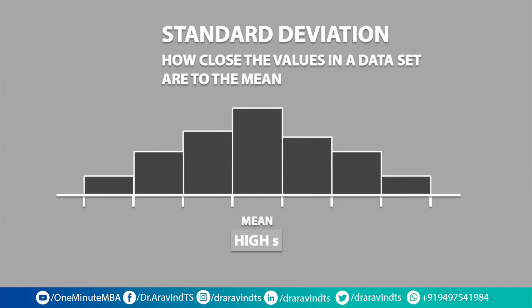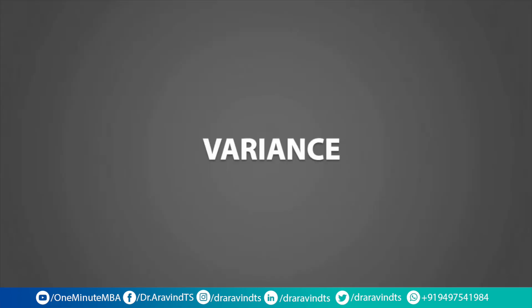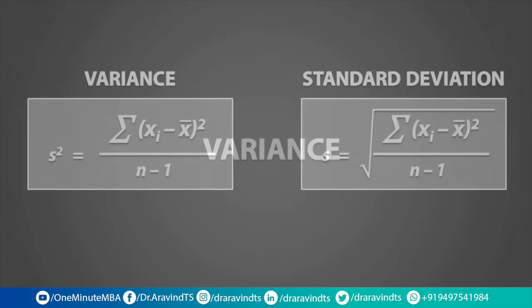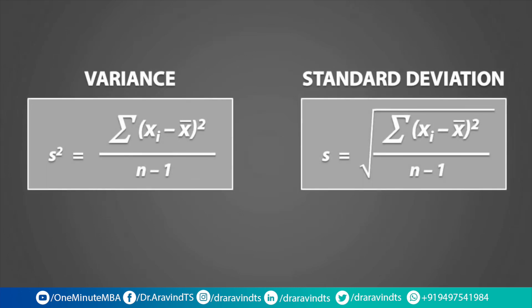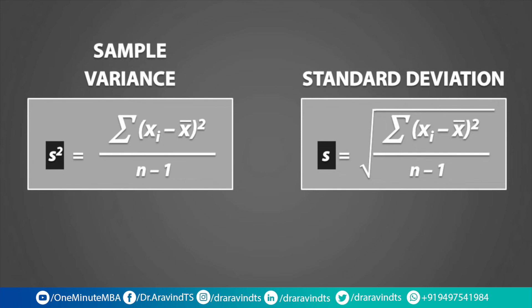The last thing we will talk about is variance. Variance is closely related to the standard deviation. The only difference between these two formulas is that the standard deviation involves taking the square root of the calculations, and for the variance, we don't take the square root. Also, notice how for the standard deviation we denote it as s, and for the variance we denote it as s squared. Both of these can be referred to as the sample variance and the sample standard deviation.